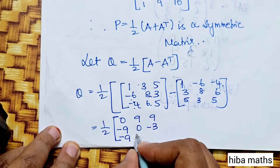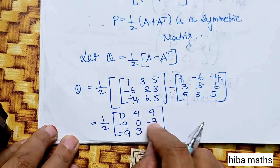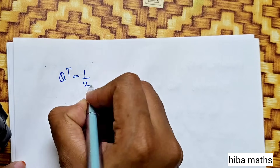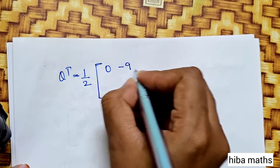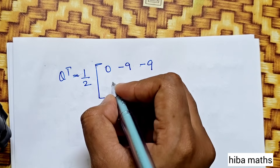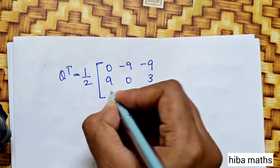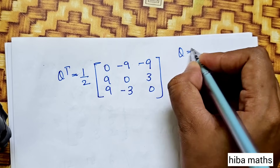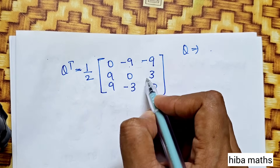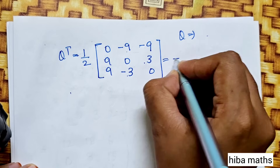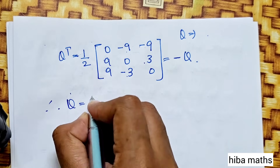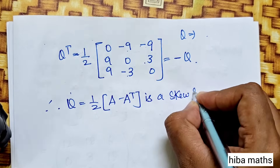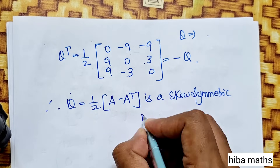Now let Q equal to 1 by 2 times A minus A transpose. This is a skew symmetric matrix. Computing the difference: [0, 9, 9; -9, 0, -3; -9, 3, 0]. We verify: minus Q equals Q transpose, so Q is a skew symmetric matrix.